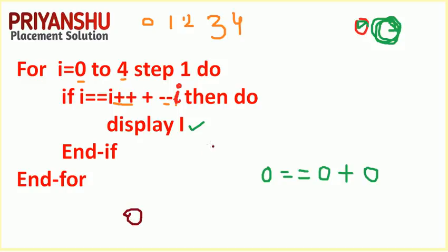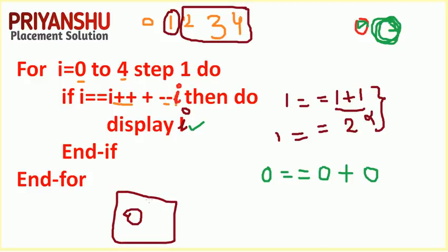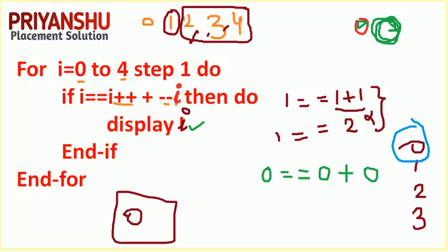Then the loop executes again. Now the value of i is 1. So the condition becomes: 1 == 1 == i, then i++ increments, then --i decrements, giving 1 + 1 = 2. The condition 2 == 1 is false. For values 2, 3, and 4, no condition is true either. So our final answer is 0. The only option that matches is 0.